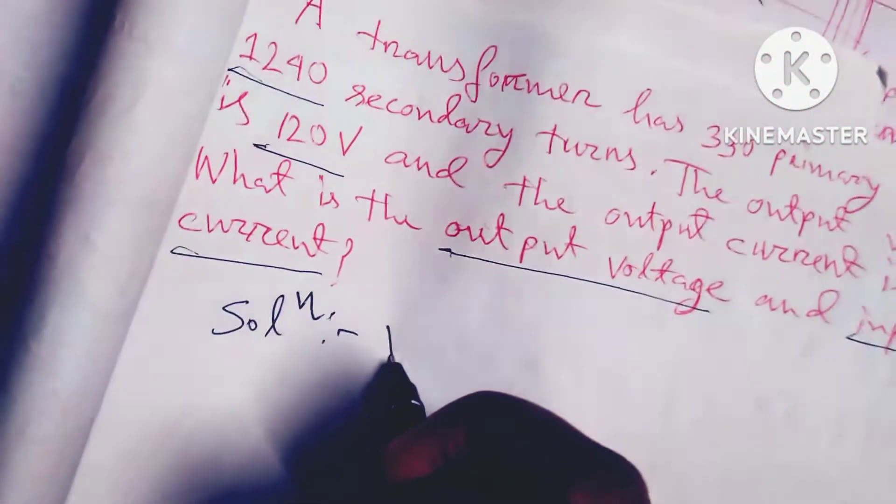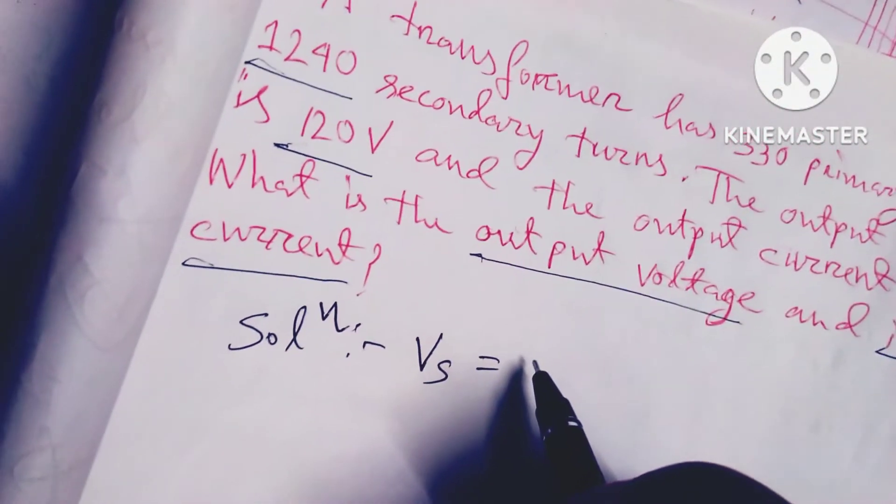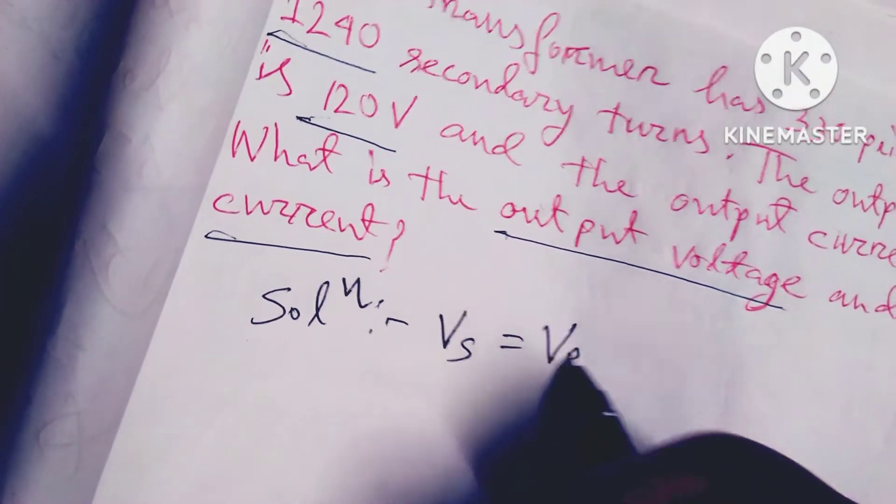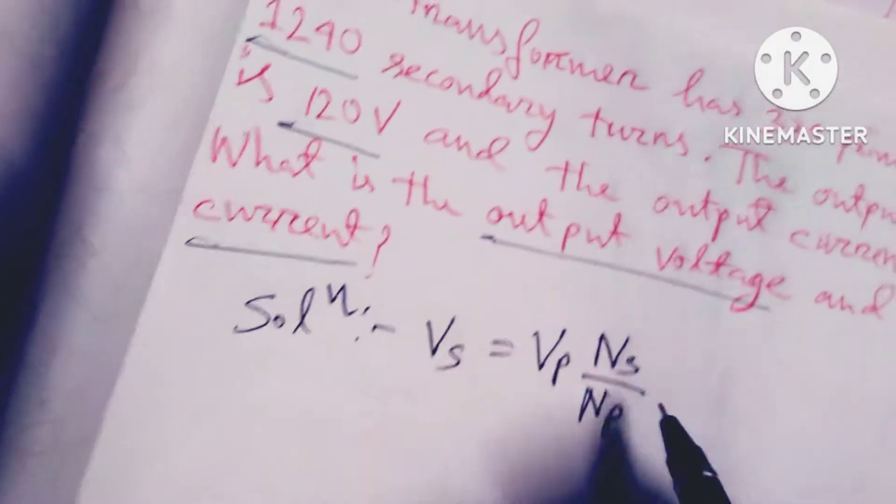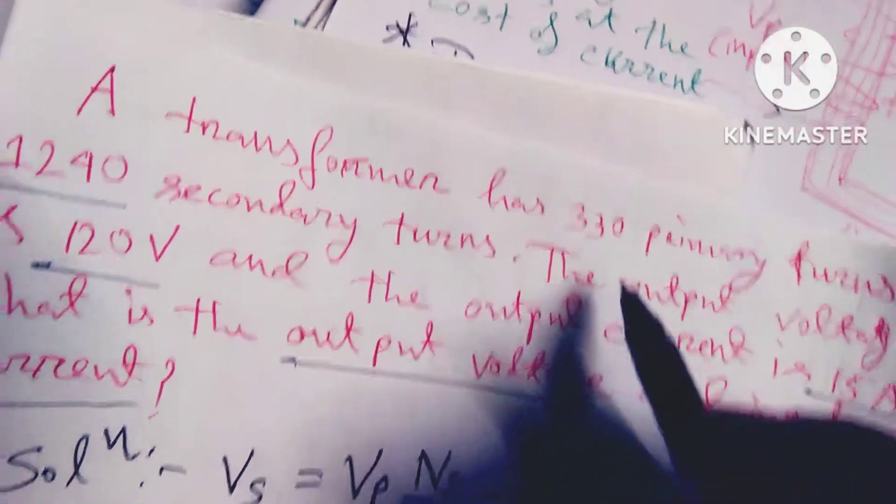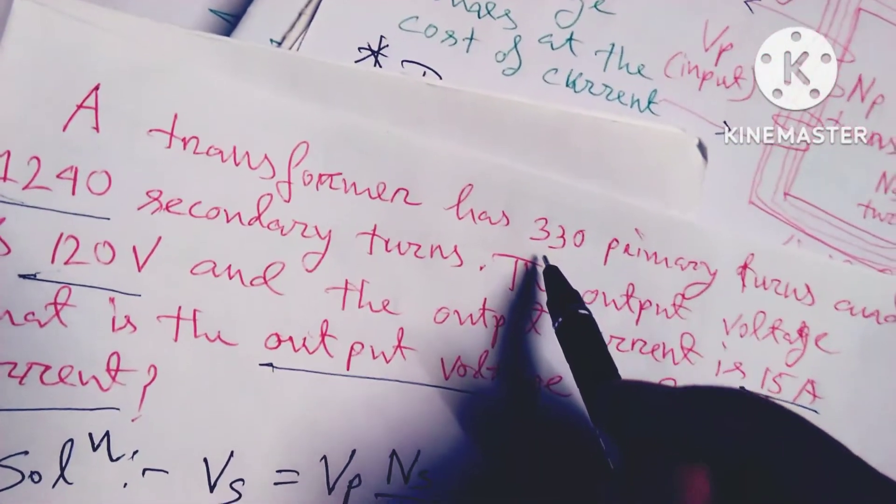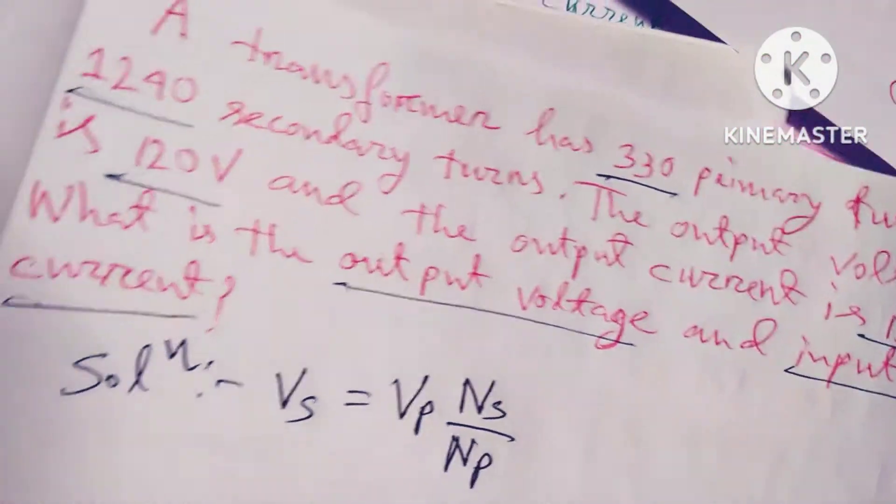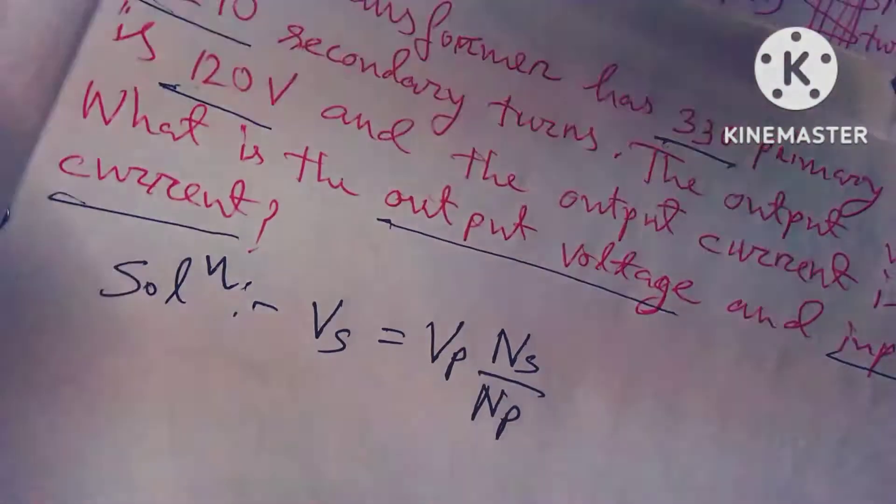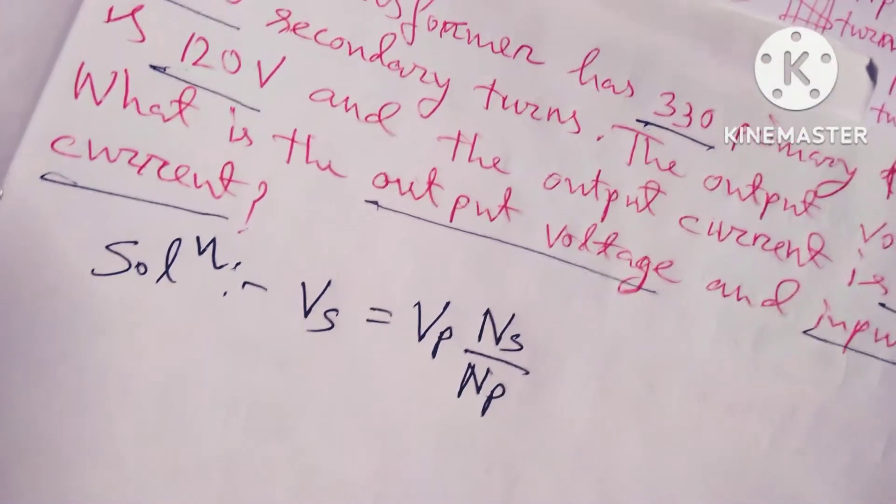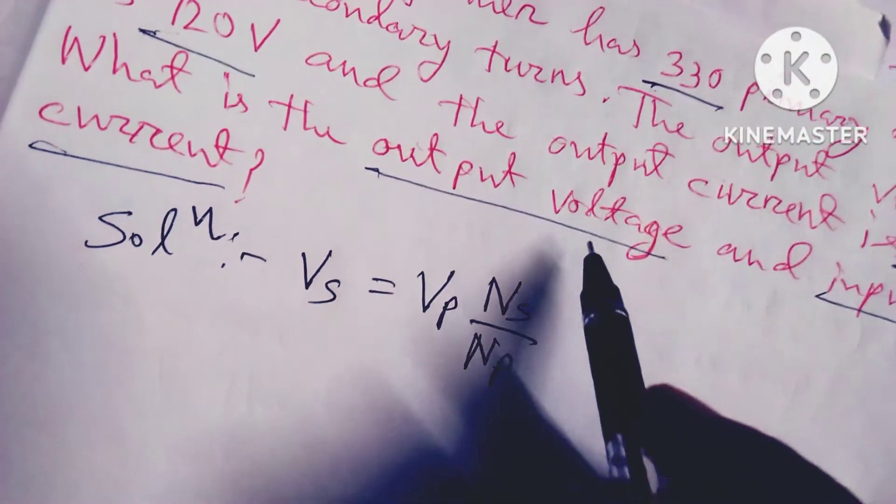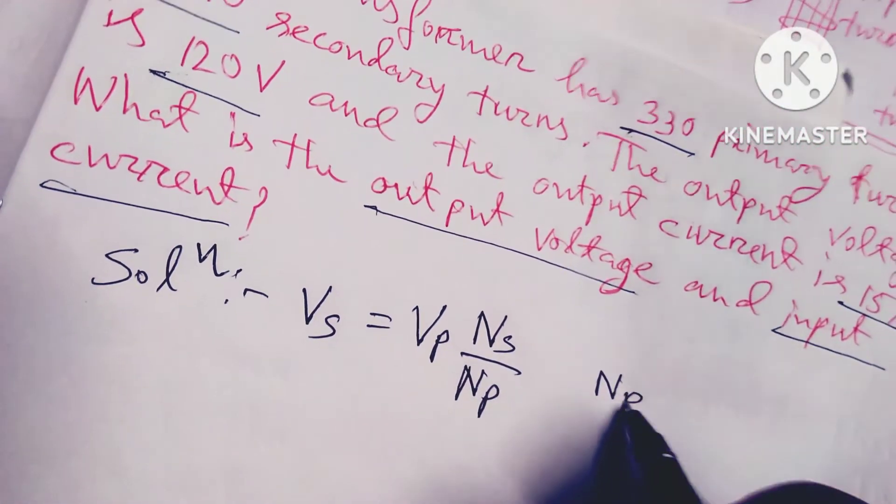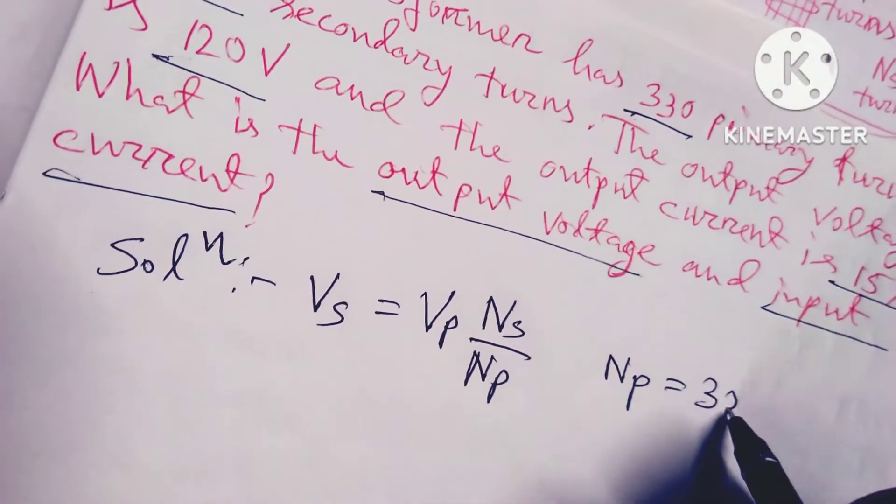Solution: Vs divided by Vp equals Ns divided by Np. So Vs equals Vp times Ns divided by Np. You see that 330 is the... if 330 is Np, Np is in here, primary, primary is 330.